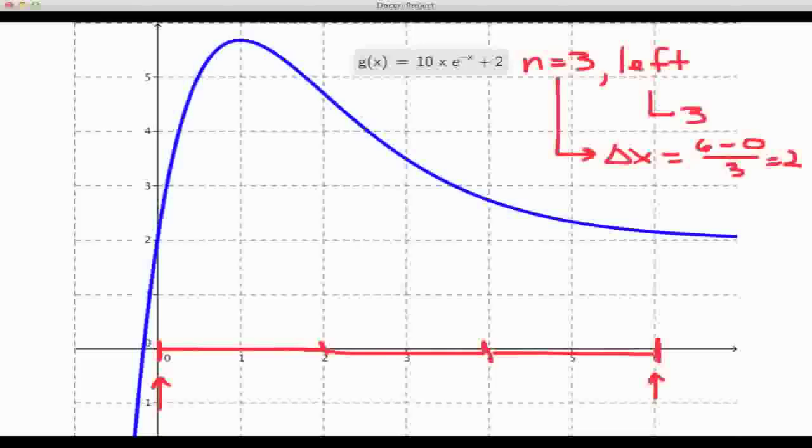Now let's draw the rectangles and then we'll do some calculations and compute this L3 sum. We're using the left-hand endpoints of each of these subintervals to construct the rectangles. So I'm going to circle those endpoints. Here's the first one, here's the second one, here's the third one.